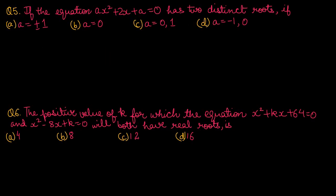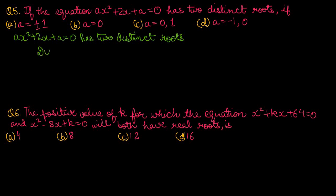Question No. 5: if the equation ax² + 2x + a = 0 has two distinct roots. Two distinct roots means discriminant > 0. Since this is a quadratic in x², the coefficient of x² is a, meaning a cannot be 0. Looking at the options, option number a suits us.